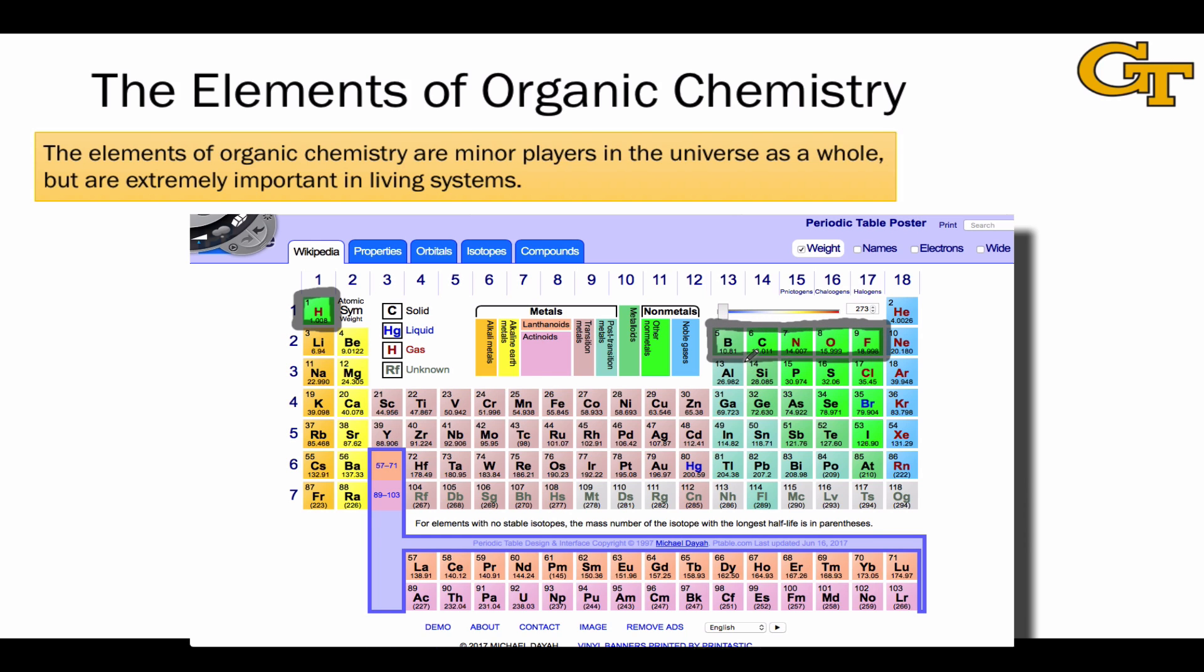A number of third row elements, such as silicon, phosphorus, sulfur, and chlorine, and even some fourth row elements, especially bromine and iodine in group 17, are also important players in organic chemistry.